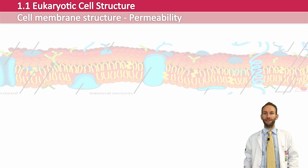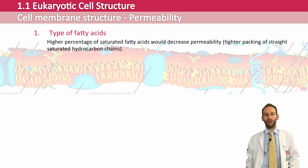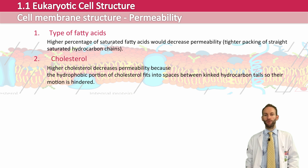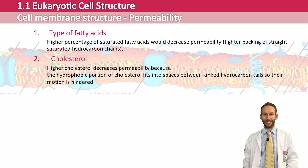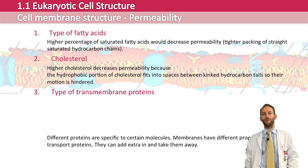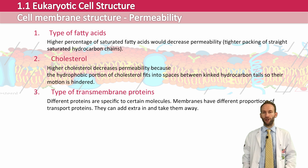The type of fatty acids affects how permeable the membrane is to certain molecules — a higher percentage of saturated fatty acids decreases permeability. Cholesterol also plays a role: higher cholesterol levels in the membrane make it less permeable. The hydrophobic portion of cholesterol fits into the spaces between the kinked hydrocarbon tails, restricting their movement, so the more cholesterol you have, the less permeable the membrane is. The types of proteins in the membrane also affect its permeability — certain proteins allow certain molecules to pass through, and the cell can add or remove protein channels, so the number and type of transport proteins is very important.